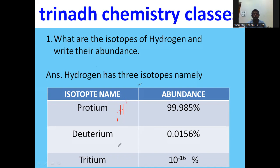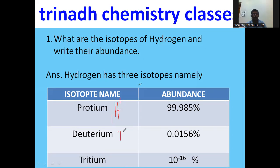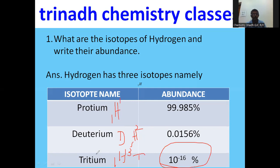Hydrogen has three isotopes: protium (¹H₁), deuterium (¹H₂, denoted D), and tritium (¹H₃, denoted T). The abundance of protium is 99.985%, deuterium is 0.0156%, and tritium is 10⁻¹⁶%. Tritium is the radioactive isotope of hydrogen.